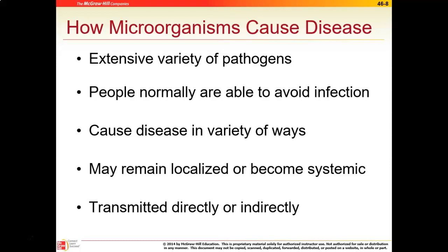Sometimes infections remain local — bacteria sets in and stays localized. If not treated, it can become systemic, affecting the entire body if it penetrates the bloodstream. Transmission can be direct — inhaling particles from a cough containing a virus or bacteria — or indirect, such as coughing into your hand, touching a doorknob, and someone else later touching that doorknob and then their face.